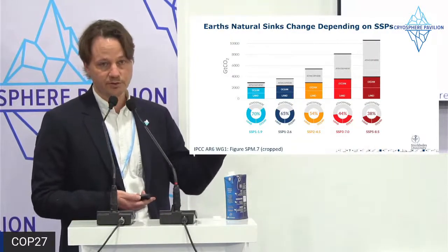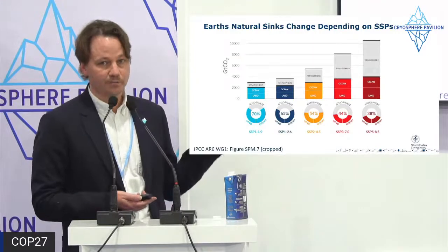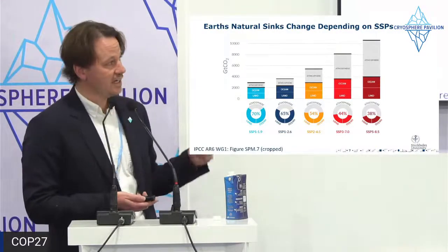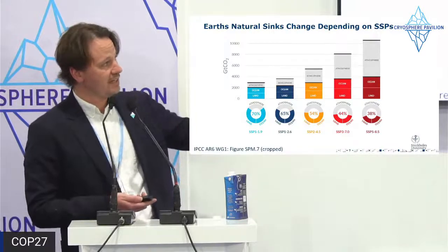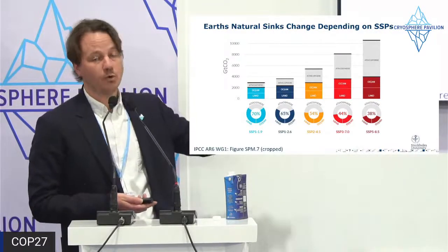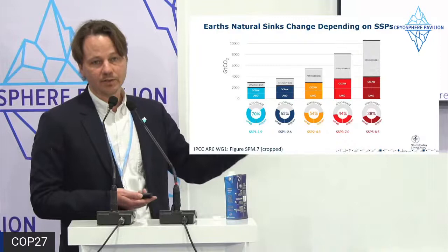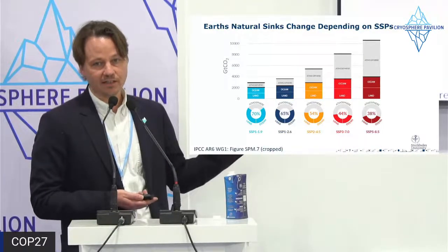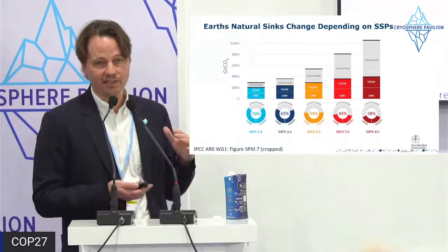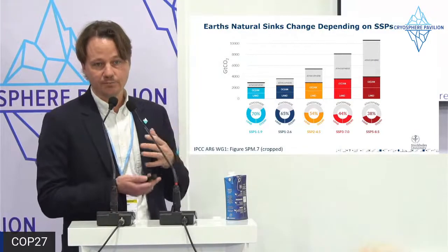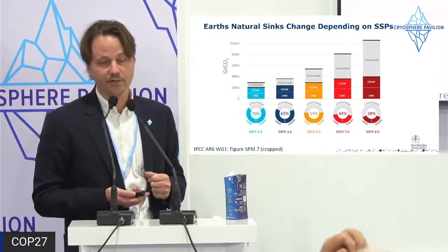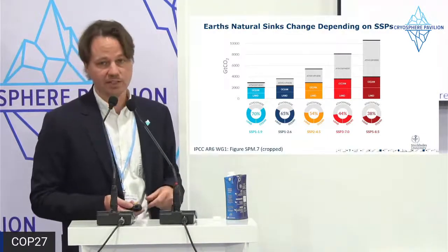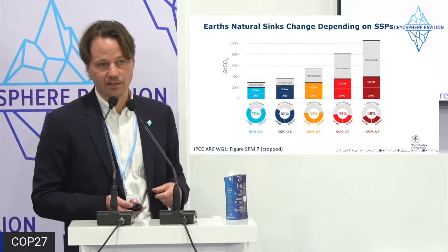Zooming in on the permafrost carbon tipping point: what the permafrost carbon feedback is doing is essentially making the land sink smaller. As permafrost emits more and more, the land sink is becoming weaker and weaker, and in the high northern latitudes that sink might even reverse.